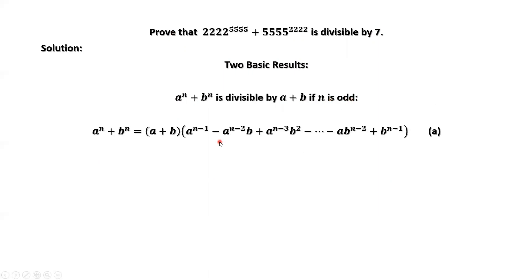Here is the detail. You may use mathematical induction to prove this simple result. You may be familiar with the case when n equals 3. This is the second result: a to the power of n minus b to the power of n is always divisible by a minus b.